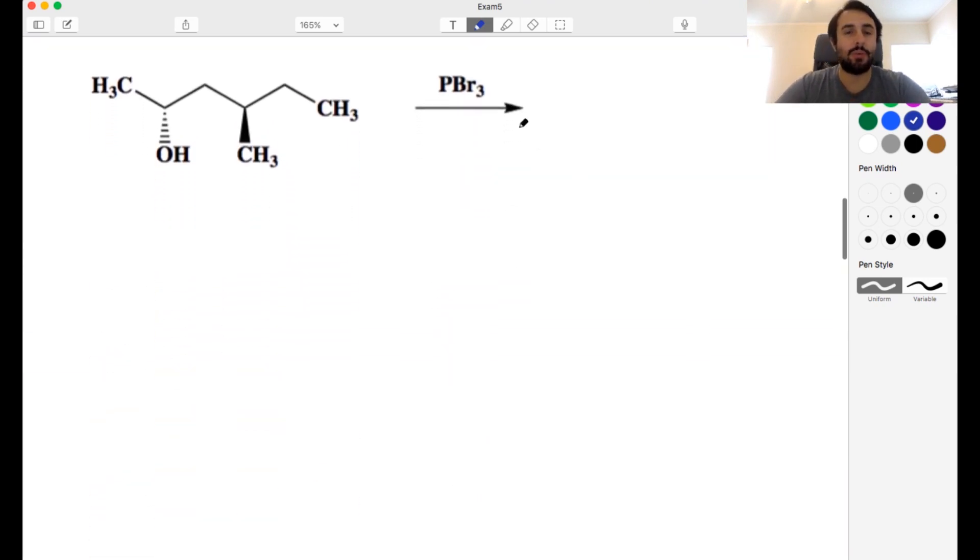Okay, next up, this is a quick one. We just want to remember what this reagent does. Whenever we see PBR3 on an alcohol, if we have an alcohol and we're going to treat with PBR3, we are just going to turn that hydroxyl into a bromine atom.